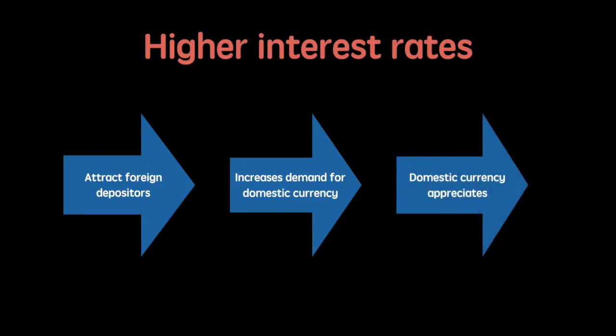A strong pound will make British exports relatively more expensive to foreign buyers and potentially decrease the value of net export revenue, resulting in decreased aggregate demand. It is important to remember that this effect can be offset by inflation and the perceived stability of the country's monetary system. A more stable economy and government is more likely to attract depositors when interest rates rise.